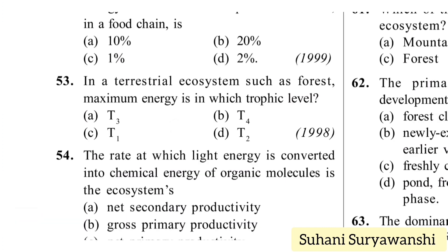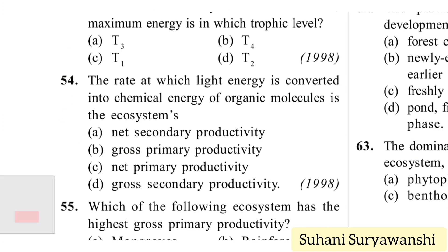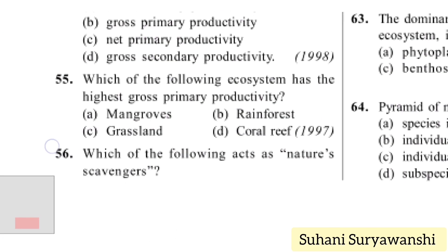In a terrestrial ecosystem such as a forest, maximum energy is at which trophic level? Maximum energy is at the first trophic level, T1. The rate at which light energy is converted into chemical energy of organic molecules is gross primary productivity — option B.